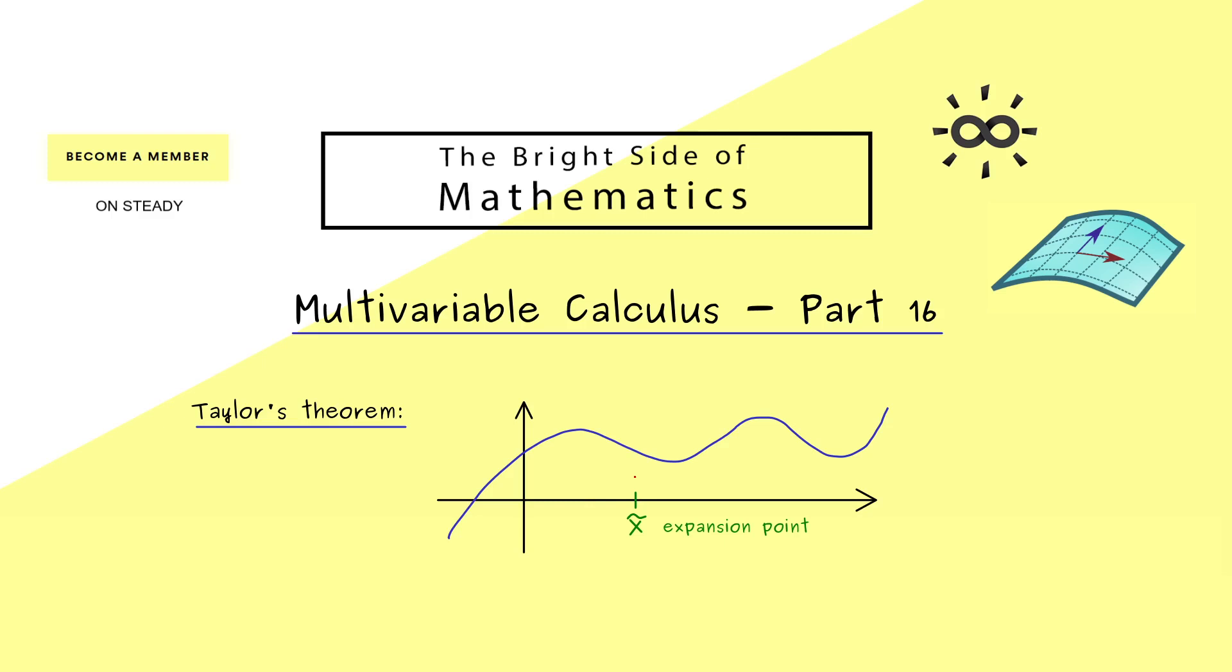And now exactly around this point we want to have local approximations. We already know that the tangent given by the derivative gives us a linear approximation. And then we can go to higher order polynomials like a parabola to get a quadratic approximation. Depending how many times the function is differentiable, we can choose an appropriate polynomial for the approximation. And in some sense the approximation should get better the higher the order of the polynomial.